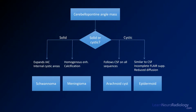This is a general flowchart to use when considering cerebellopontine angle masses. If you follow this approach you'll be able to come up with a useful differential most of the time and even get to your most likely diagnosis. First, think about whether your mass is solid or cystic. For a solid mass, your two main choices are schwannoma and meningioma. Schwannomas tend to have internal cystic areas and are centered in and expand the IAC. Meningiomas tend to enhance more homogeneously and often have calcification or hyperostosis associated with them.